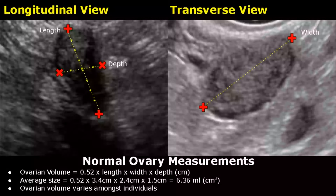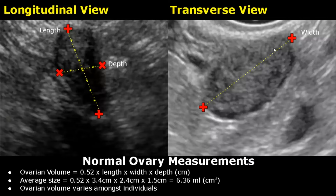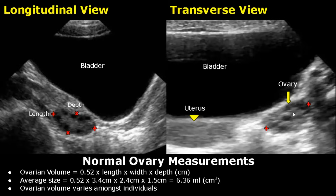Here are more transvaginal images showing measurements of the ovary — length, depth, and width in transverse view. These images are transabdominal with caliper placements for length, depth, and width of the ovary.